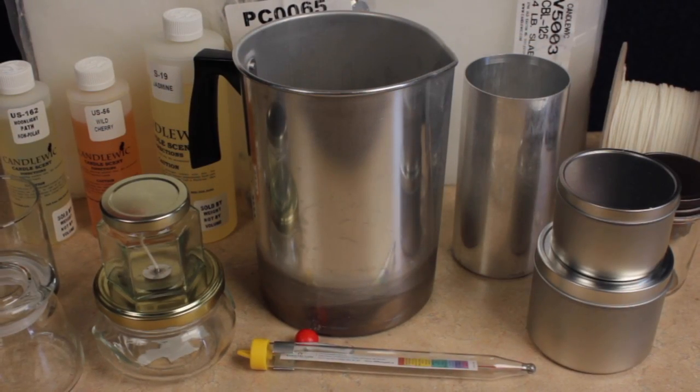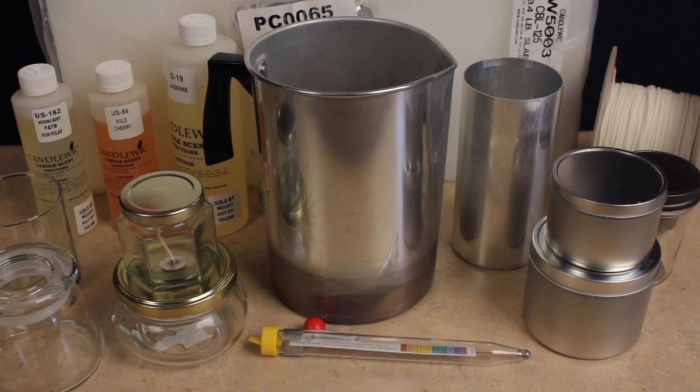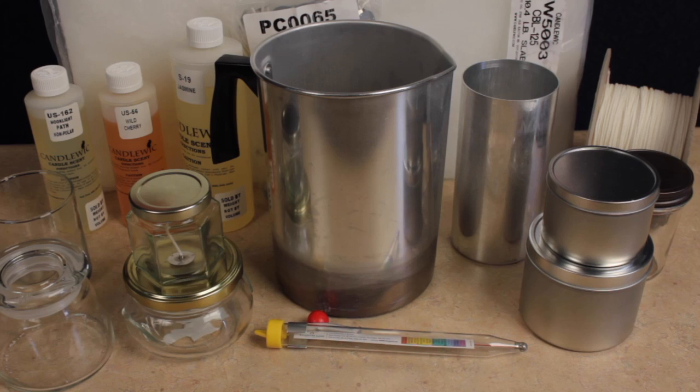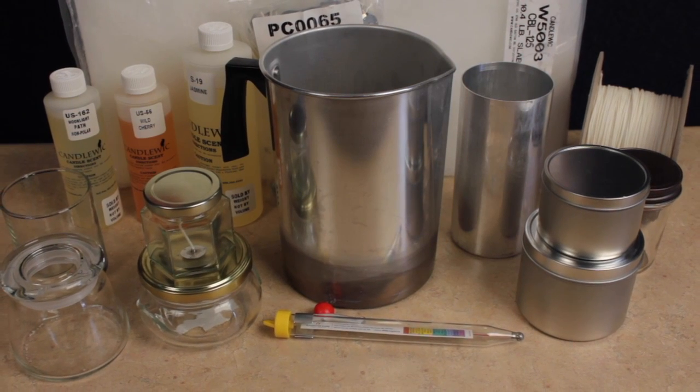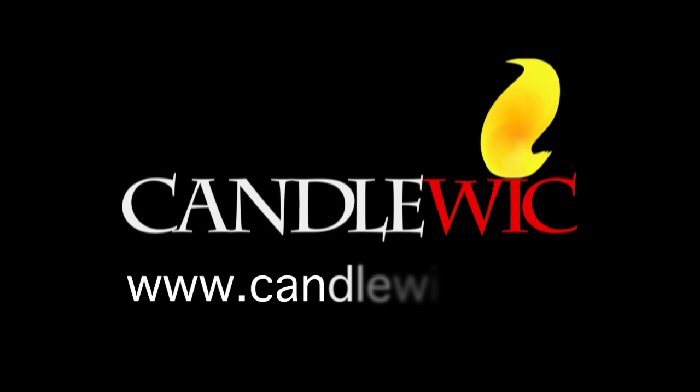The kit's pouring pot and thermometer can be reused to create a wide range of candles in a variety of compositions, colors, sizes, and scents simply by using different materials. Visit the Candlewick website to find additional supplies, equipment, and ideas.